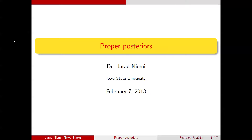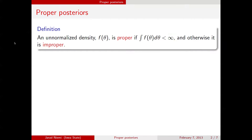Hello, this is Jared Niemey with a video on whether your posterior is proper in Bayesian parameter estimation. As a reminder, if we have an unnormalized density f of theta, we call it proper if the integral of that density over the support of theta is finite, and otherwise we call it improper.